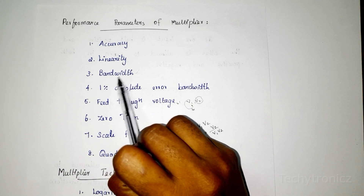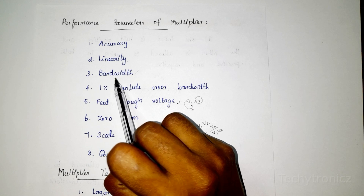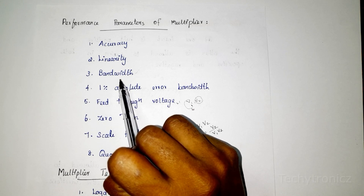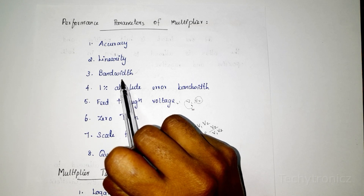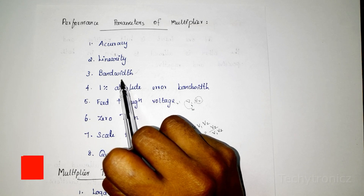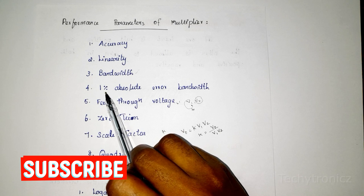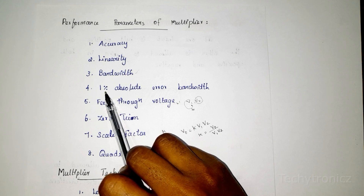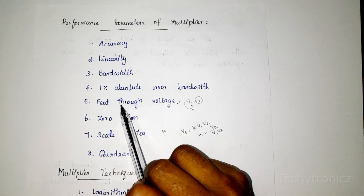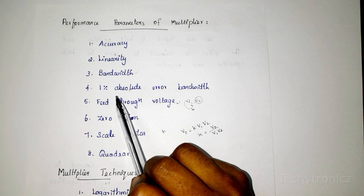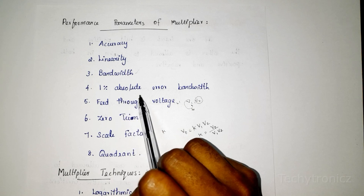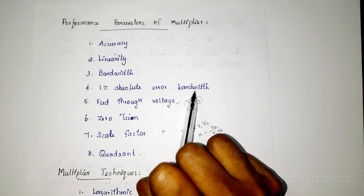The next parameter is bandwidth. Small signal bandwidth is the frequency range up to where the output is 3 dB below its low frequency value. The 1% absolute error bandwidth represents the maximum frequency where the output magnitude starts to deviate from its low frequency value by 1%.